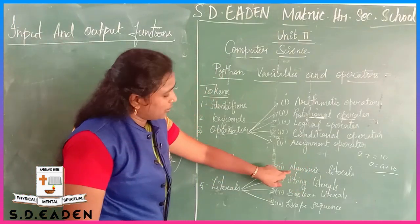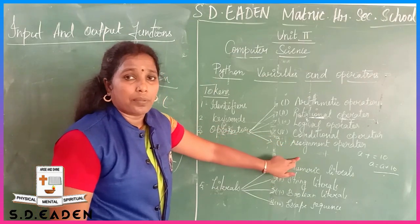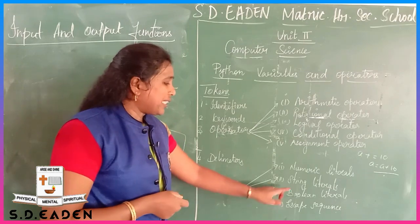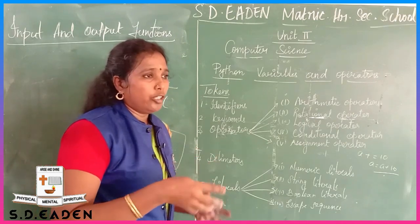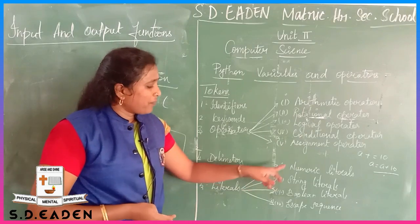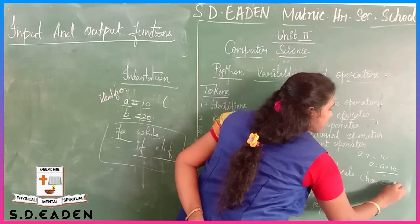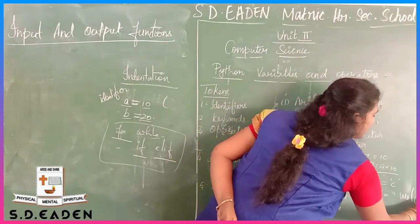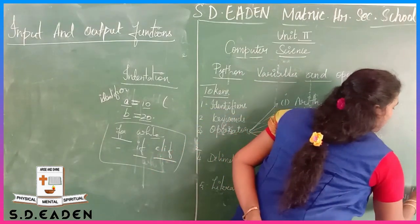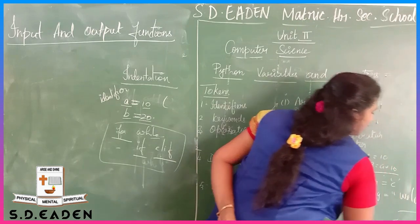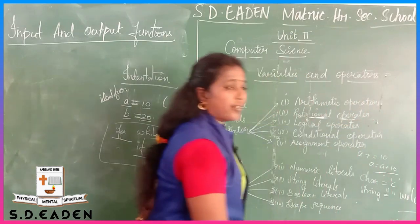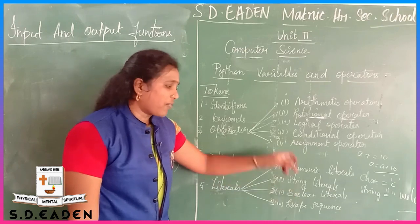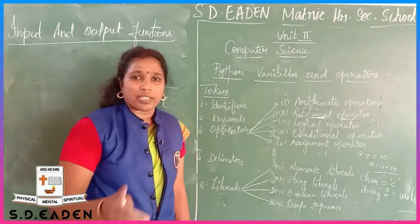Next are literals. Numeric literals include binary and hexadecimal types. String literals - a single character or a sequence of characters is a string. Multi-line strings are also possible. You can use single quotation or double quotation marks to define strings - for example, 'welcome' or 'welcome to Python'. Boolean literals have only two values: true or false.